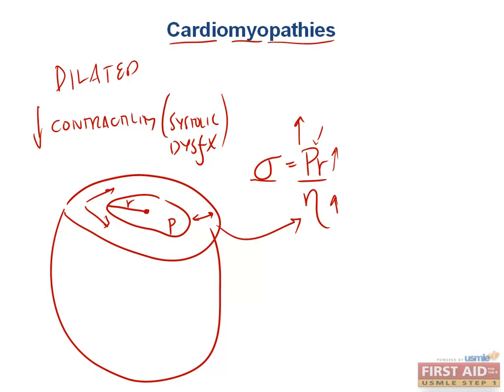And that's exactly how the heart compensates. It follows physics — it doesn't have a brain, it doesn't think, it just does what the law of nature tells it to do. The law of Laplace tells us that an increase in wall tension (sigma) can be due to an increase in ventricular pressure or radius, or due to a decrease in wall thickness.